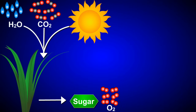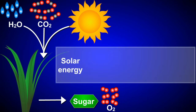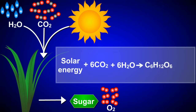These photosynthetic reactions are typically written as a chemical formula: solar energy plus six carbon dioxide molecules plus six water molecules react to produce one glucose molecule and six molecules of oxygen.